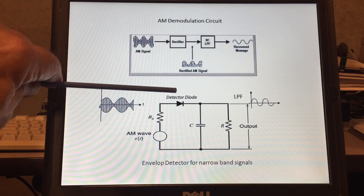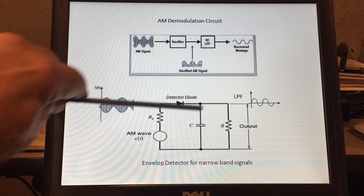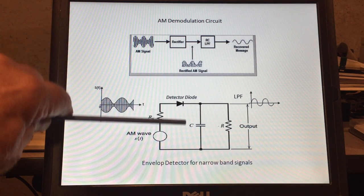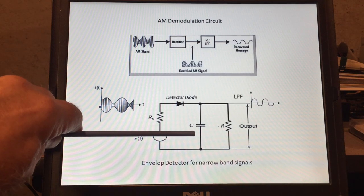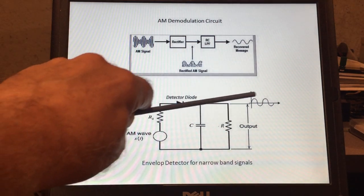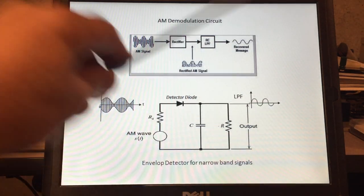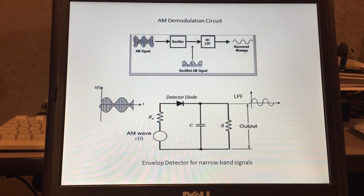Then we have a diode detector. This is usually a Schottky diode or a germanium diode. The reason why we use those type of diodes is because they have a much lower voltage drop than a silicone diode. And then we have an RC time constant here that's used to capture the envelope, to detect the envelope. So let's see what that's all about.